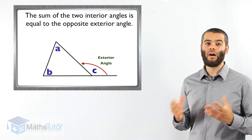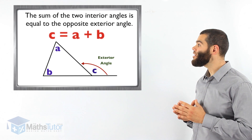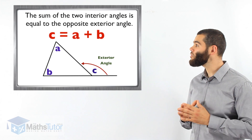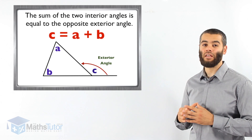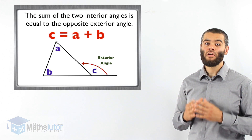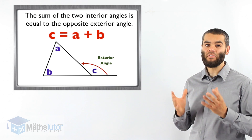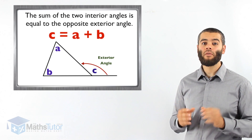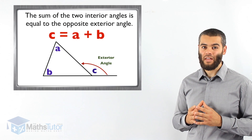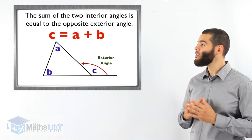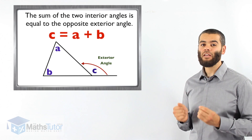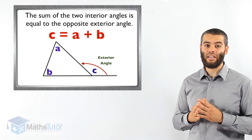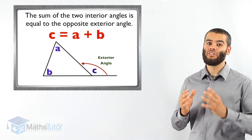In mathematics we write it like this: C, which is the exterior angle, equals A plus B. A plus B are the two interior angles opposite the exterior angle outside. When you add them up, they'll always add up to the exterior angle. So C equals A plus B — A and B added together will add up to C outside.